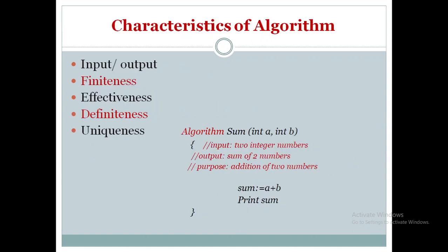Having understood what an algorithm is, let us move on to the characteristics of an algorithm. Here we have designed a small algorithm that reads two integer numbers A and B, performs their addition, and prints the result. This is the structure of the algorithm. The forward slashes are comments, written for documentation purposes. The algorithm has only two steps: sum = A + B, and print sum. The first characteristic is that an algorithm should take at least one input and generate at least one output — it can take multiple inputs and generate multiple outputs. For example, an ATM machine takes a card, a PIN, and the withdrawal amount as inputs, then dispenses cash and displays the remaining balance as outputs.